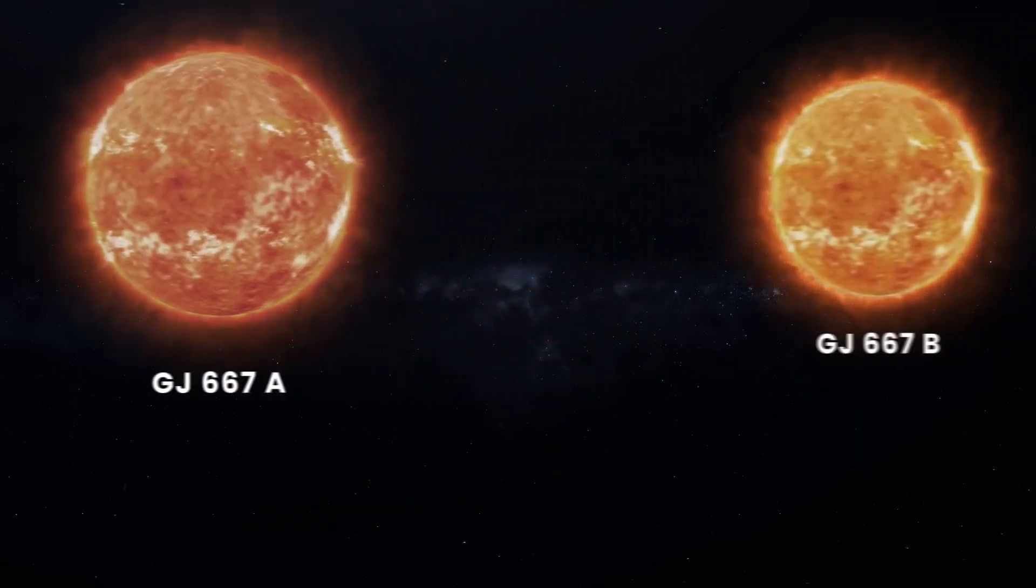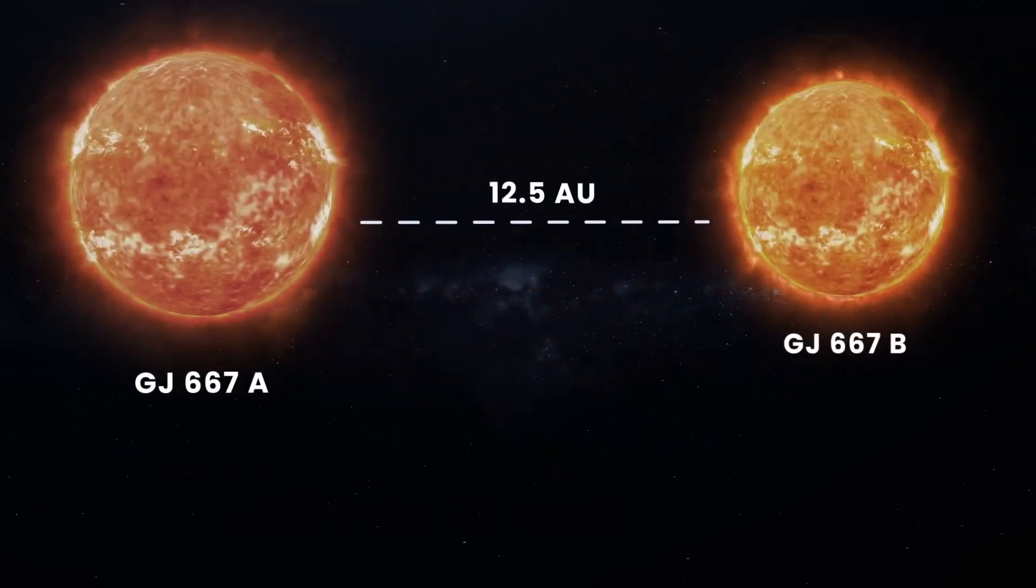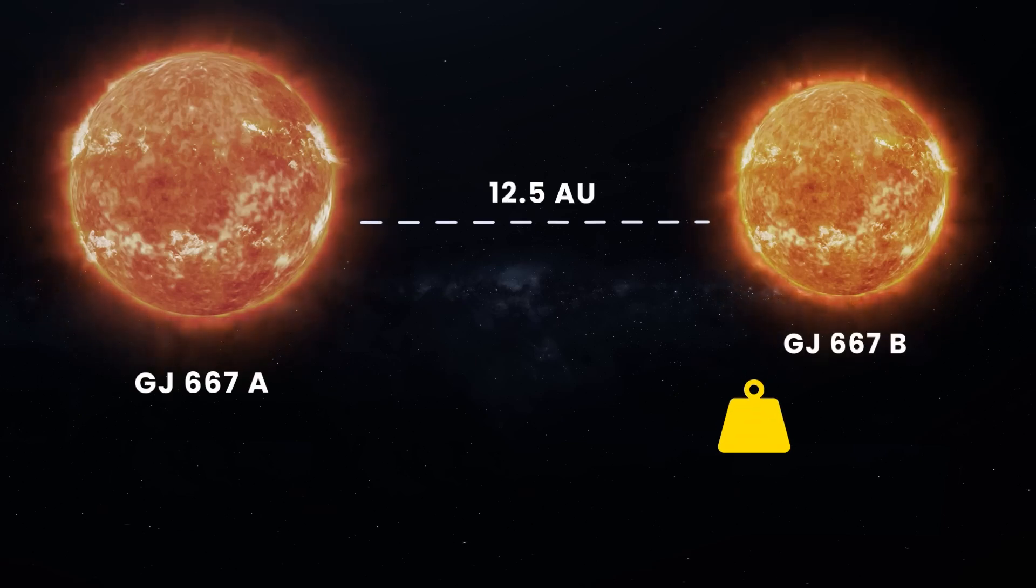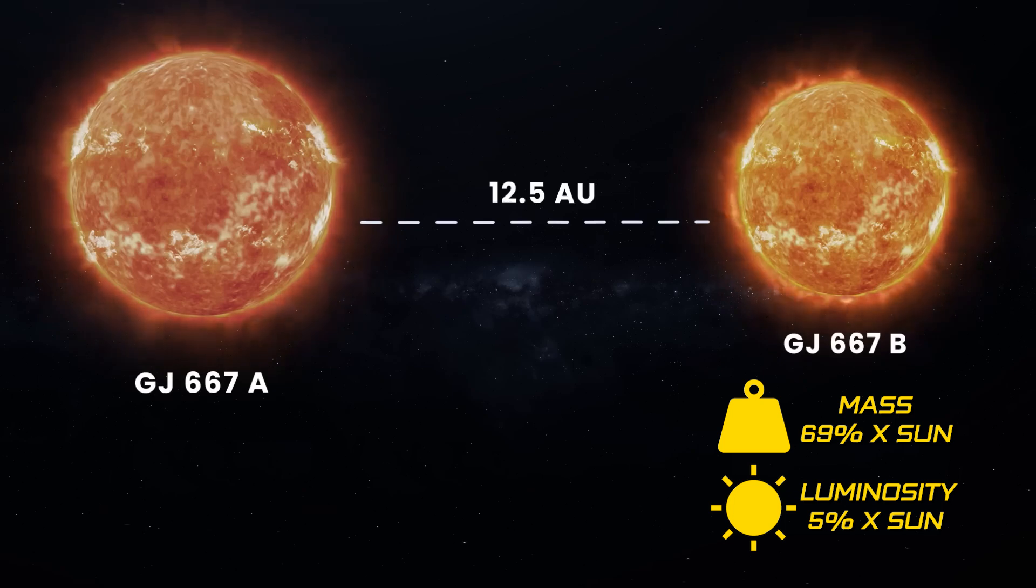Keeping GJ 667-A company at an average distance of 12.5 astronomical units is its companion, GJ 667-B. This fellow K-type orange-red dwarf holds about 69% of the Sun's mass and emits a mere 5% of our star's visual luminosity.